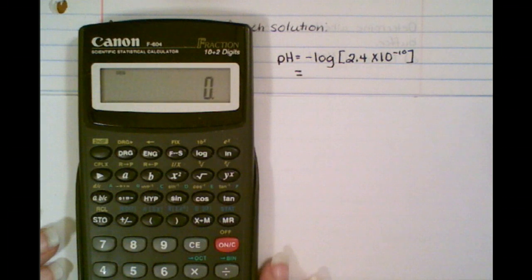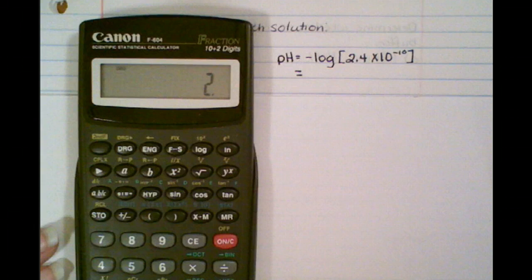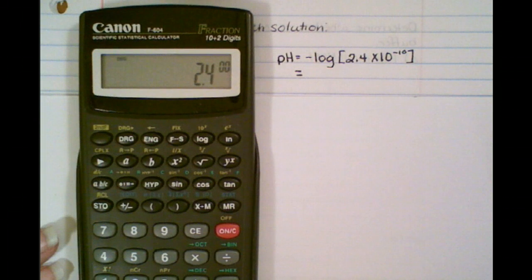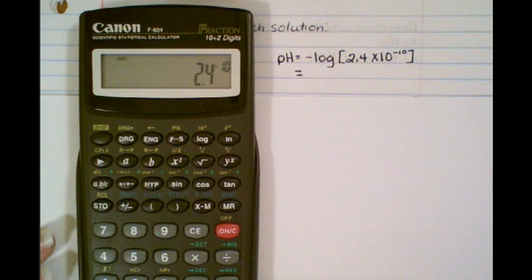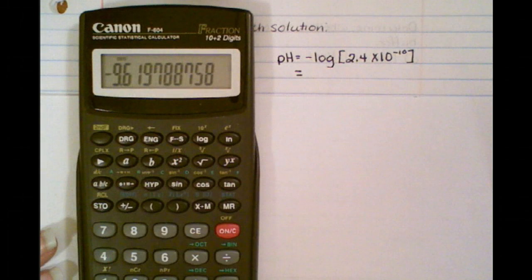So when you put it in the calculator, you're going to put what's inside of those brackets first. So you're going to do 2.4. Now, it says times 10. Remember, that's going to be your EXP or your EE key. On mine, it's an EXP. So I'm going to push EXP, and then I'm going to put in minus 10. Now, it says you want to take the log of that. So you push log, and then you're going to take the opposite of that number.